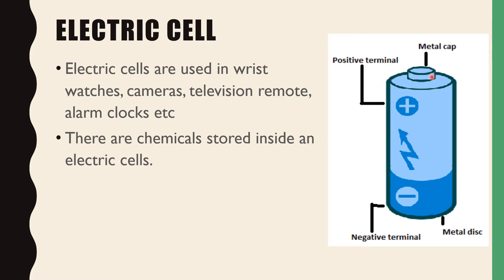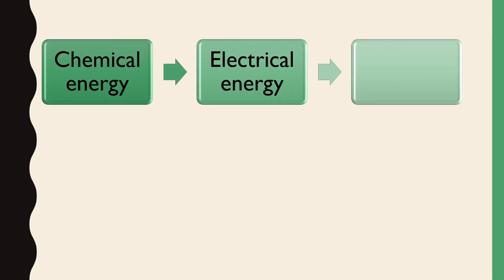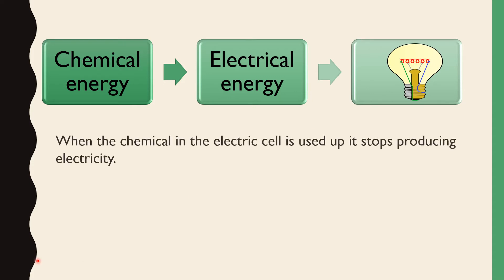The positive terminal is near the metal cap and the negative terminal is near the metal base. One wire should be connected to the positive terminal and the other wire to the negative terminal. There are chemicals stored inside an electric cell — that chemical energy gets converted into electrical energy, which causes the bulb to glow. When the chemicals are used up, the cell stops producing electricity and you need a new electric cell.